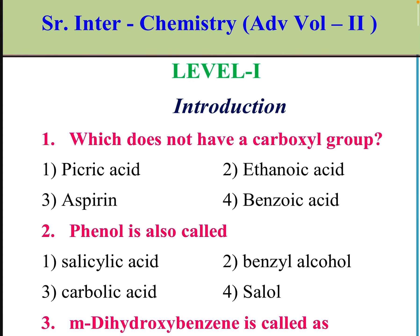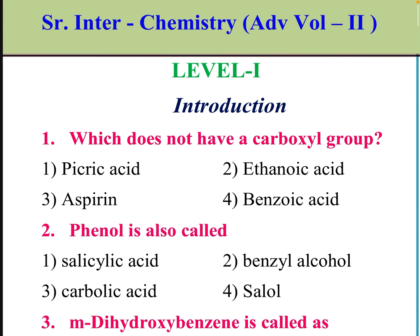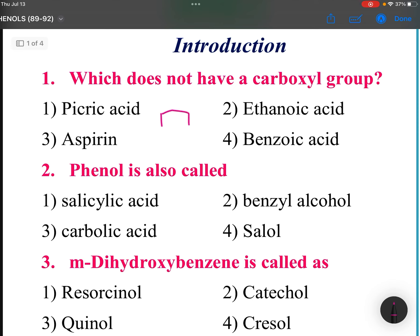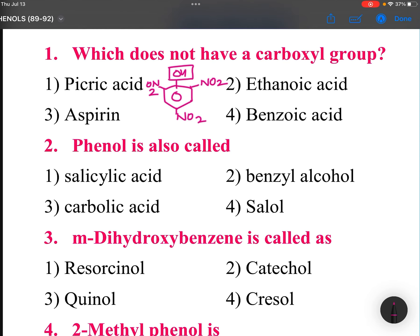Phenols assignment. This question asks which compound does not have a carboxyl group. If you look at picric acid, it is OH with 3 NO2 groups. When 3 NO2 groups and an OH group are present, this is picric acid — there is no COOH group, no carboxyl group.